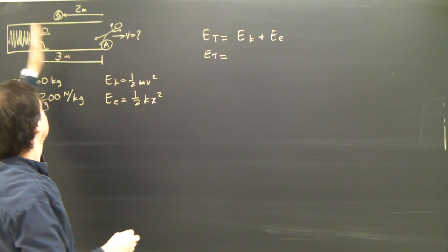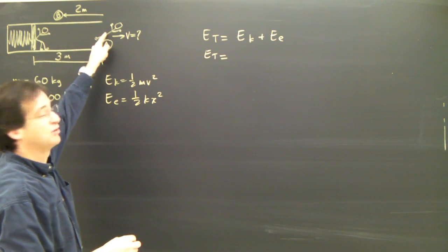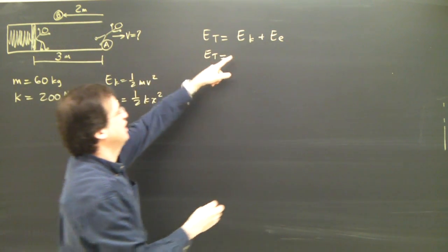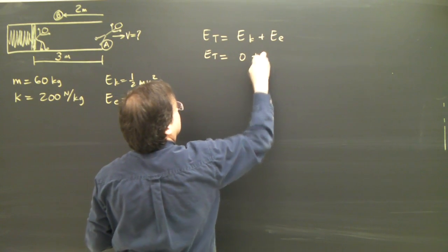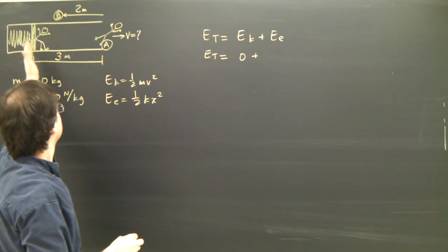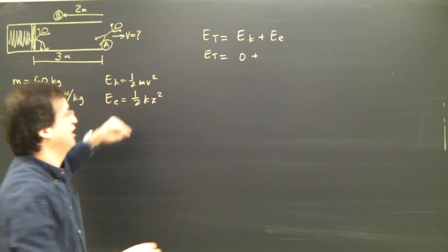They start at zero velocity and they end up at the velocity out here. So the kinetic at that point is zero. At the beginning their elastic energy is one half kx squared.